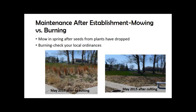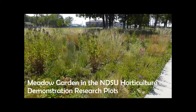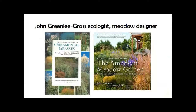Burning would be great for maintenance as it used to manage the prairie, but you need permits and burning in the city probably isn't possible. Mowing is the best bet. The NDSU garden shown in May before and after mowing illustrates the process — mow in spring after plants have dropped their seed, then clear up debris so everything can start fresh again.